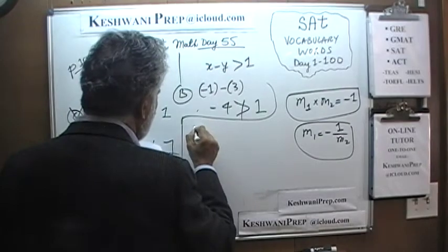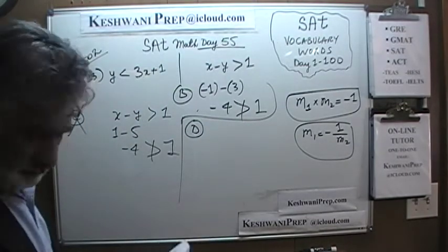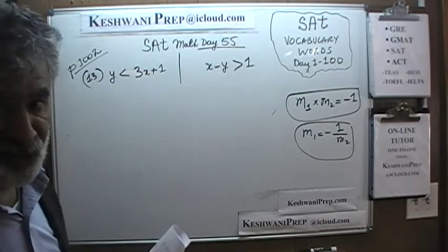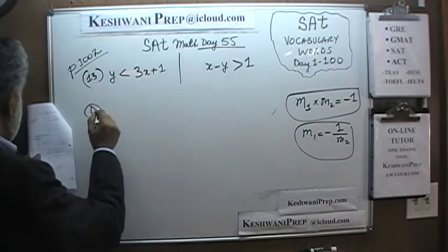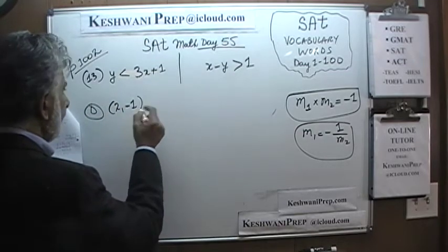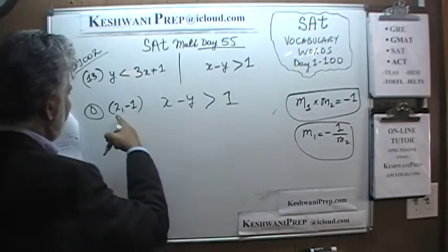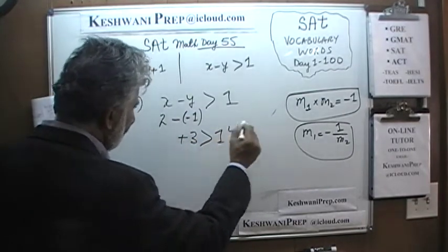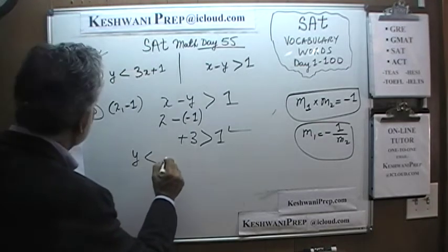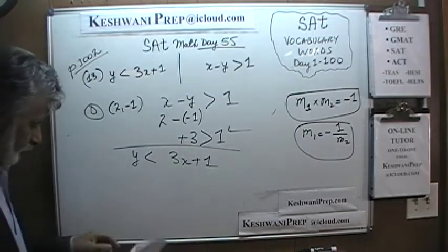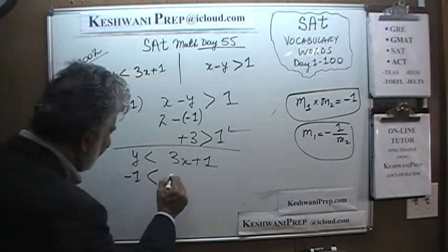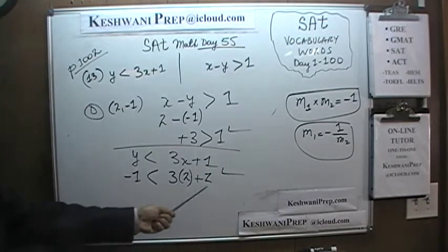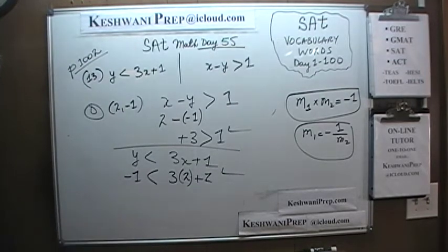The correct answer has to be D because it is the only one left. Answer choice D says 2 and negative 1. First inequality: x minus y equals 2 minus negative 1 equals positive 3, and 3 is more than 1 — it works. Second inequality: y less than 3x plus 1; negative 1 is less than 3 times 2 plus 1, which is 7 — of course that works. The answer is D.